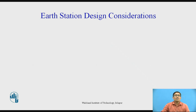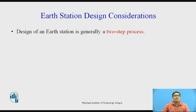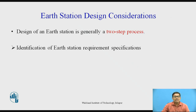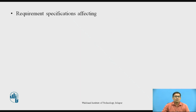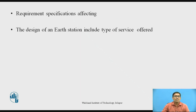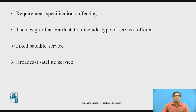Now we want to see Earth Station design considerations. The design of an Earth Station is generally a two-step process. The first step is identification of the Earth Station requirement specification, and the second step is identifying the most cost-effective architecture that achieves the desired specification. The requirement specifications affecting the design include types of service offered: fixed satellite service, broadcast satellite service, and mobile satellite service.